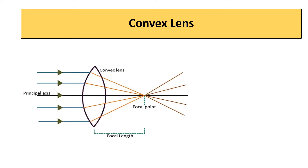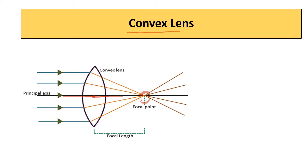In this convex lens, the incident rays are parallel to the principal axis and hence after refraction they pass through the focus. The ray which passes through the optical center goes straight — it is undeviated. The distance between the optical center and the focus is called the focal length. As these rays are converging, this convex lens is called a converging lens.